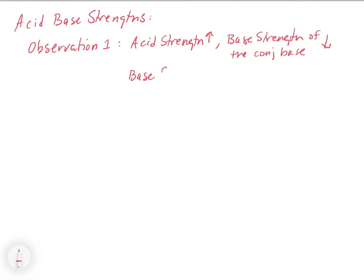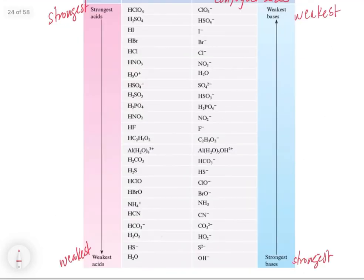So as base strength increases, the acid strength of the conjugate acid decreases. There's this sort of opposite trend. Now let's go back to our chart and take a look at something else that's quite important.